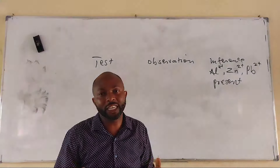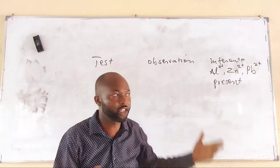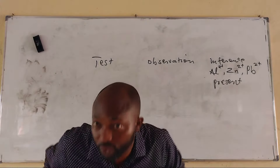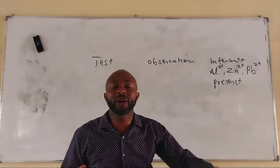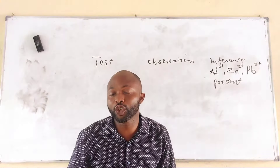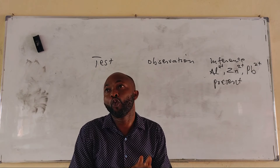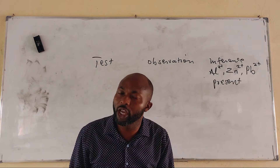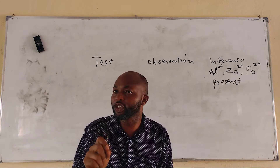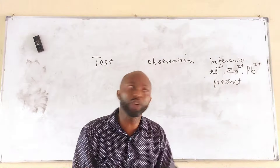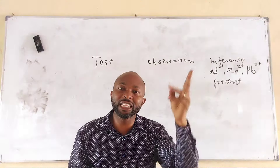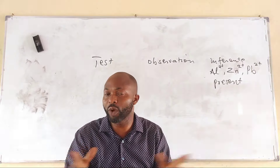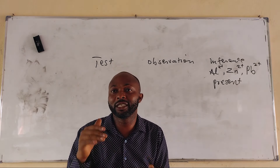If one of the reagents is ammonia solution, which we also use to identify cations, what would these various cations give us? When we add ammonia solution to a sample in a test tube and we get a white gelatinous precipitate in drops, which is soluble in excess of ammonia solution, we say it is zinc. Only zinc is soluble in ammonia solution. In sodium hydroxide, zinc, lead, and aluminum are all soluble, but in ammonia solution, only zinc is soluble — so we can know the difference.